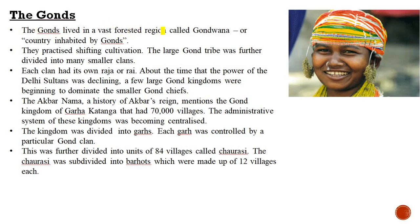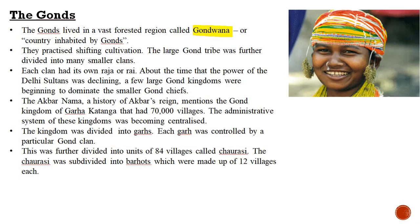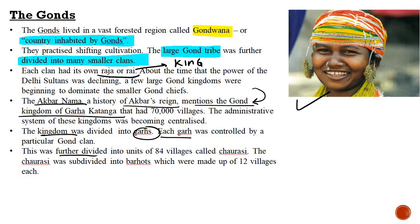The Gonds lived in the vast forested region called Gondwana — meaning 'country inhabited by Gonds.' The large Gond tribe was further divided into smaller clans, and each clan had its own raja or rai (king). The Akbarnama mentions the Gond kingdom of Garha Katanga. Each Gond kingdom was further divided into 84 villages known as Chaurasi, and Chaurasi was subdivided into Burhuts.